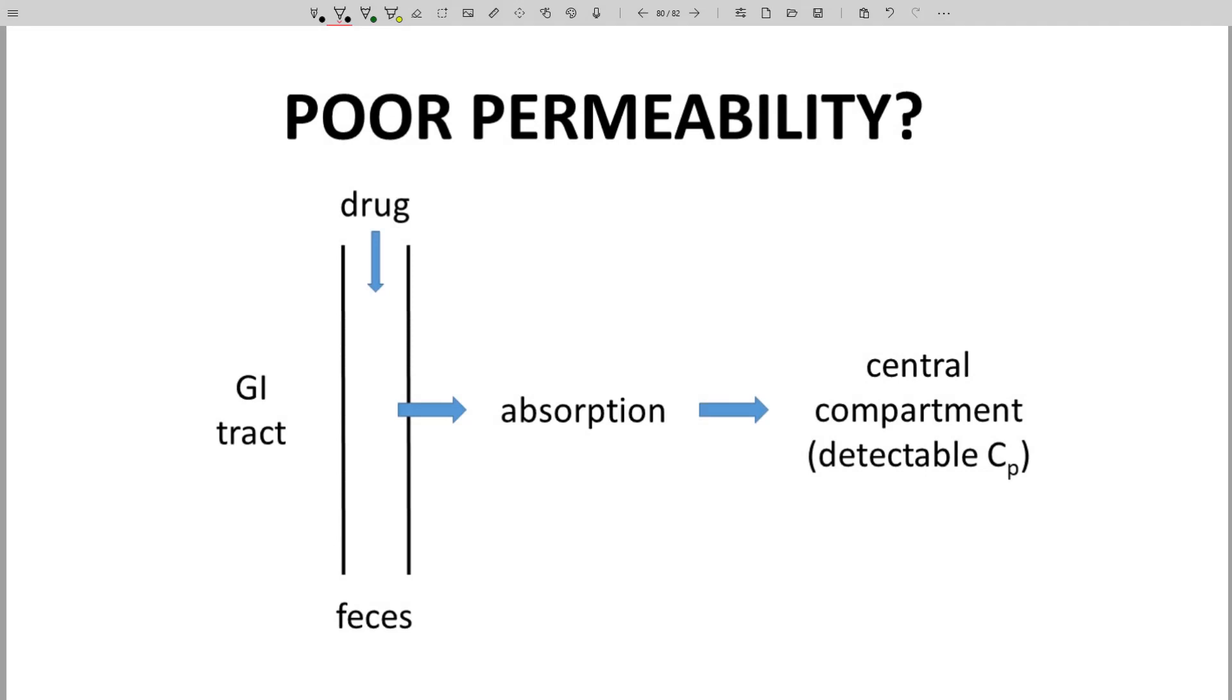Our first option is that the molecule was unable to cross the lining of the GI tract. The molecule showed low membrane permeability. If the molecule can't cross membranes, then it will pass right through the patient and into the feces.